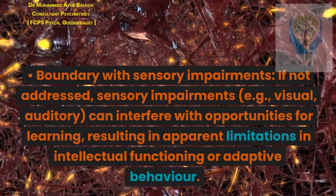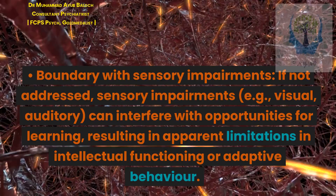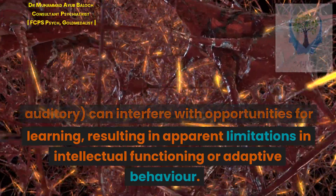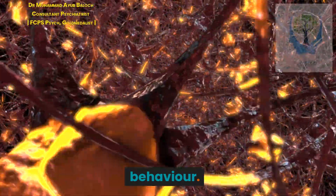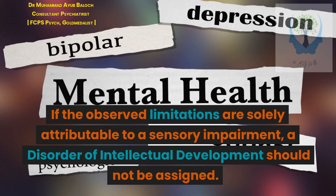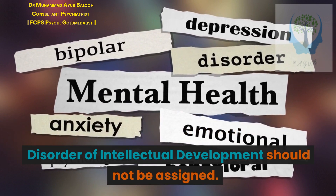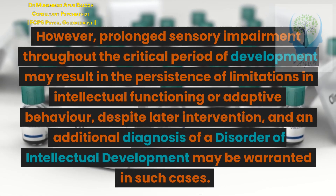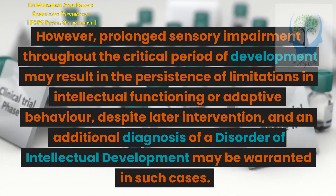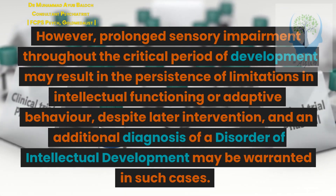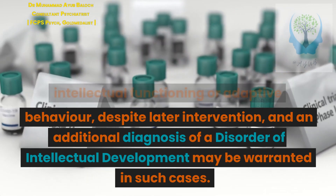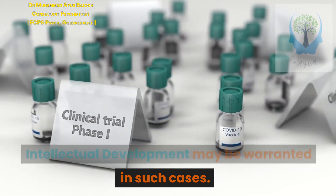Boundary with sensory impairments. If not addressed, sensory impairments — for example, visual or auditory — can interfere with opportunities for learning, resulting in apparent limitations in intellectual functioning or adaptive behavior. If the observed limitations are solely attributable to a sensory impairment, a disorder of intellectual development should not be assigned. However, prolonged sensory impairment throughout the critical period of development may result in the persistence of limitations in intellectual functioning or adaptive behavior despite later intervention, and an additional diagnosis of a disorder of intellectual development may be warranted in such cases.